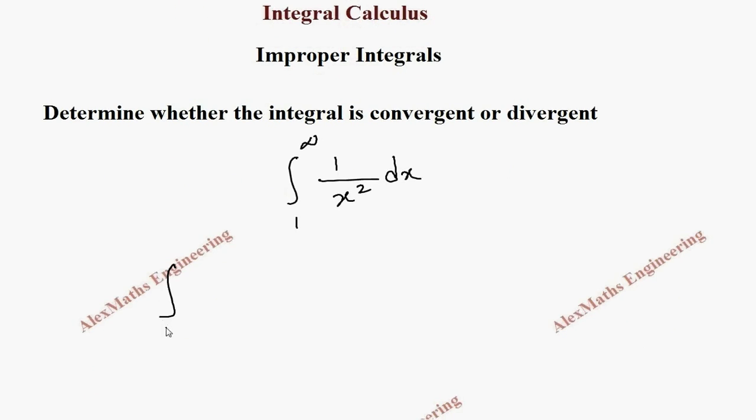This can be written as integral from 1 to t of dx by x square, where the limit t tends to infinity.